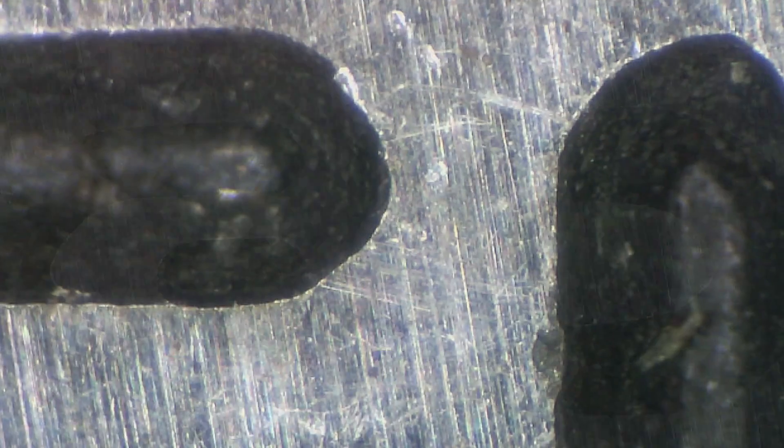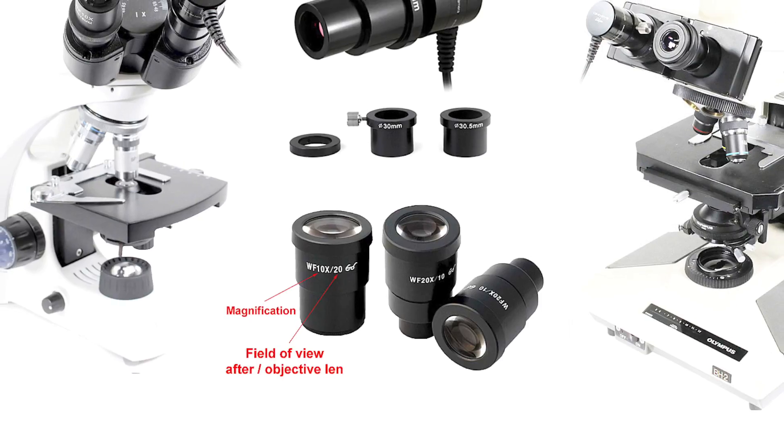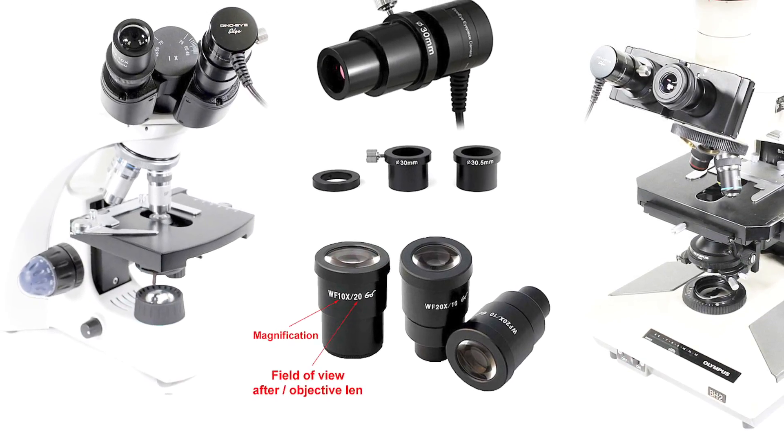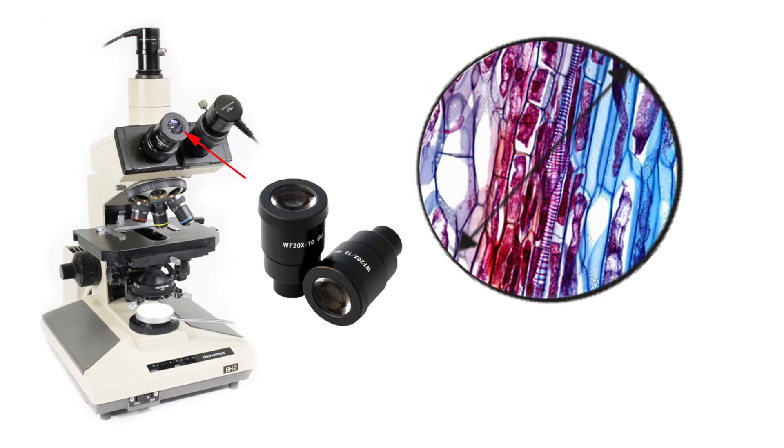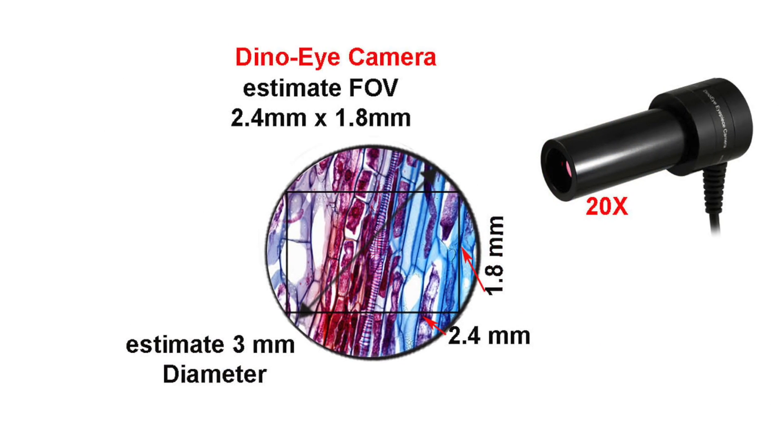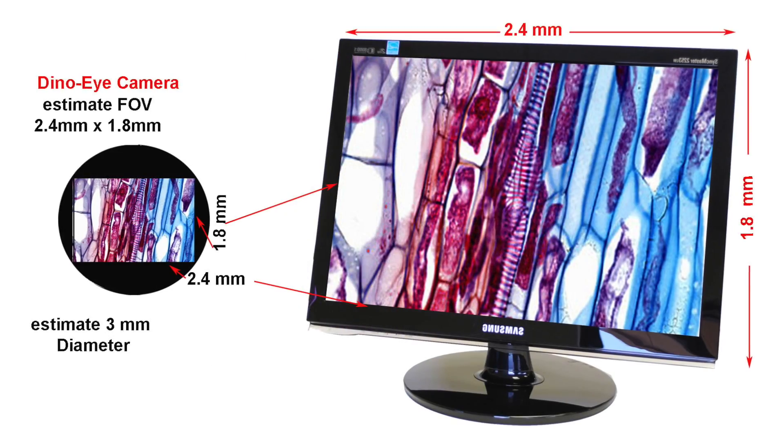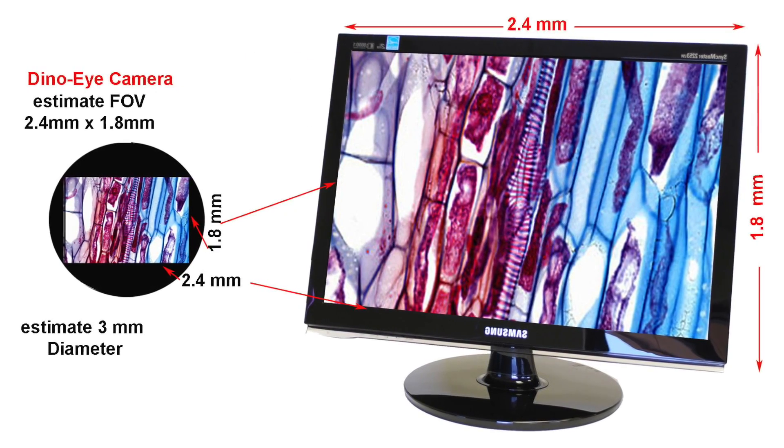To understand the field of view difference between human eye viewing through the microscope's eyepiece and an eyepiece camera digital field of view, first you must understand the field of view of the eyepiece is a circular area. The viewing area of the digital eyepiece camera is cut within this circular field, leaving some of the edges outside of view.